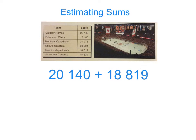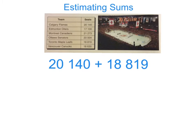So Johnny, you and your team in Calgary get about 20,140 fans, is that correct? Yeah, 20,140 real good fans we get out there, Tanner. And how about the Toronto Maple Leafs? They get about 18,819 fans. Let's take a look at these first two numbers here: 20,140 plus 18,819.